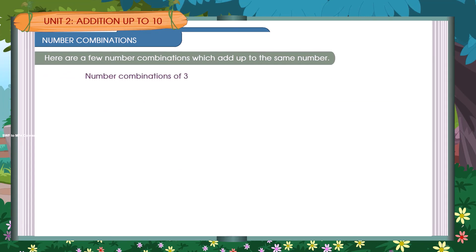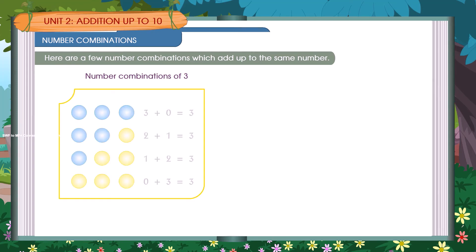Number combinations of 3: 3 plus 0 is equal to 3; 2 plus 1 is equal to 3; 1 plus 2 is equal to 3; 0 plus 3 is equal to 3.